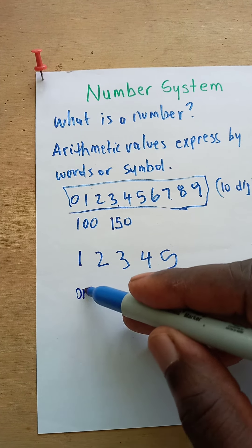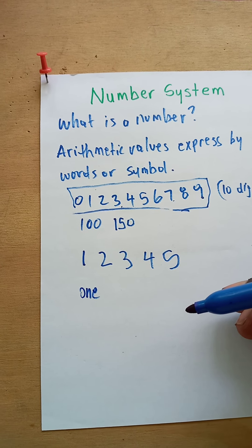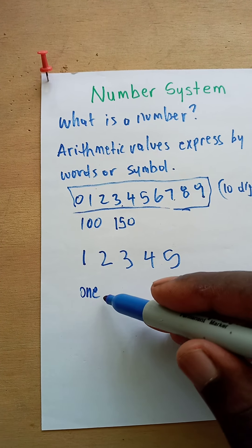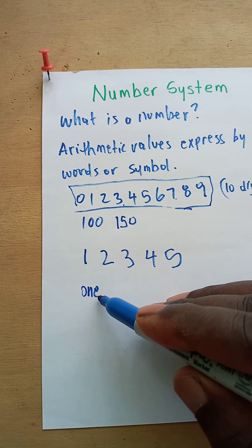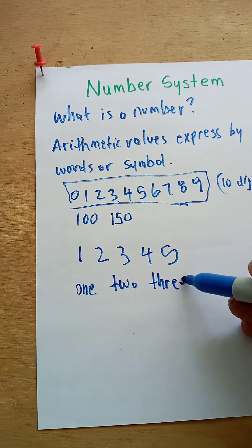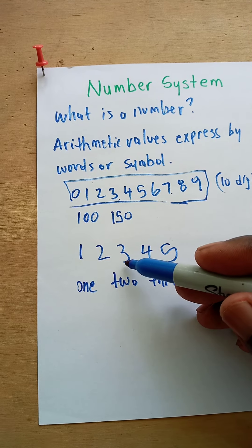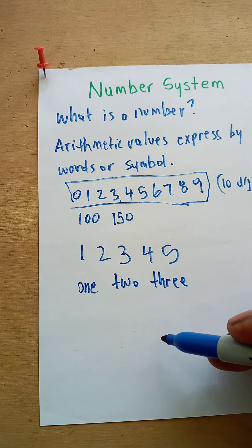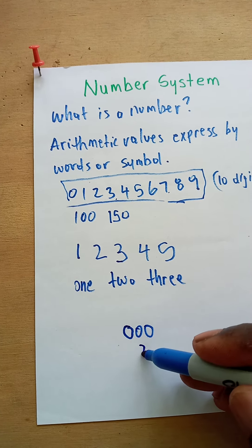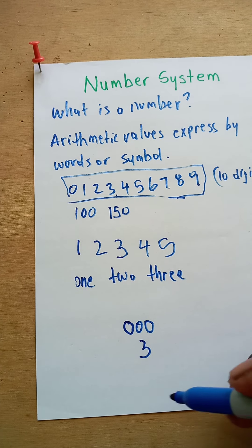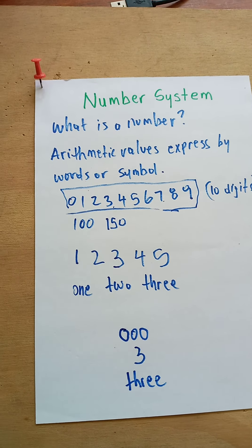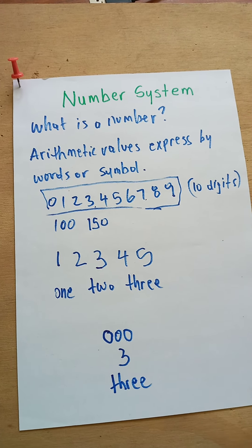We can also express numbers by words. Words are made of letters — we have 26 letters in the alphabet. For example, one is O-N-E, two is T-W-O, three is T-H-R-E-E. I don't need to write the symbol for three because the value it represents — the quantity — is three. That's the quantity; the symbol is the sign, and this is the word.